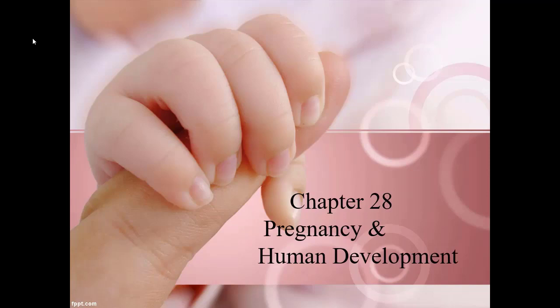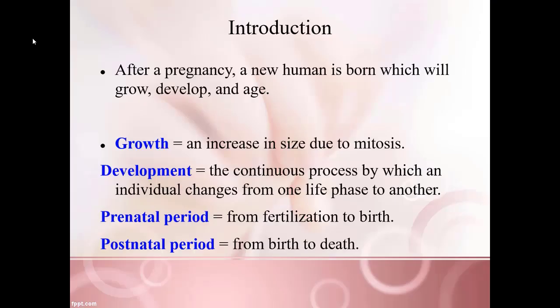Welcome back to the class. In this video, we will discuss Chapter 28, Pregnancy and Human Development. In our last chapter, we talked about the male and female reproductive system and how they each make sex cells. As an introduction to this chapter, we'll talk about what happens when those individual sex cells combine and form a new human. After a pregnancy, a new human will be born and will eventually grow, develop, and age.